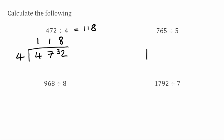Moving on we've got 765 divided by 5. 5 fits into 7 once because 5 times 1 is 5, leaving a remainder of 2. Carrying that over, we now have 26. 5 fits into 26 five times because 5 times 5 is 25, leaving a remainder of 1. Finally, 5 fits into 15 exactly 3 times. So our answer is 153.